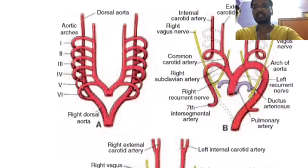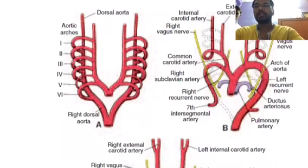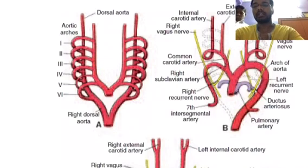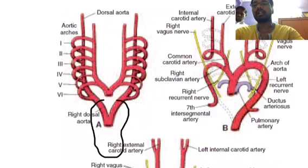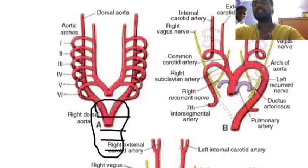Good evening. Today I am going to discuss how the aortic arches are developed. If you see this picture, these two ventral structures are called the aortic sac. When you see where it is developed from, the heart tube is present in the ventral mesocardium, which has the sinus venosus, primitive atrium, primitive ventricle, and truncus arteriosus.